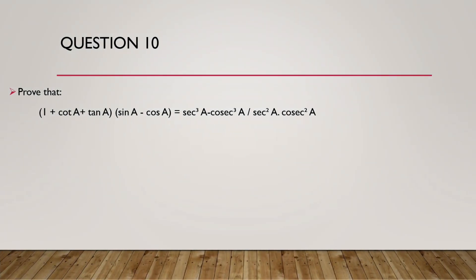Question 10. Prove that 1 plus cot a plus tan a multiplied by sin a minus cos a equals sec cube a minus cosec cube a whole divided by sec square a dot cosec square a.